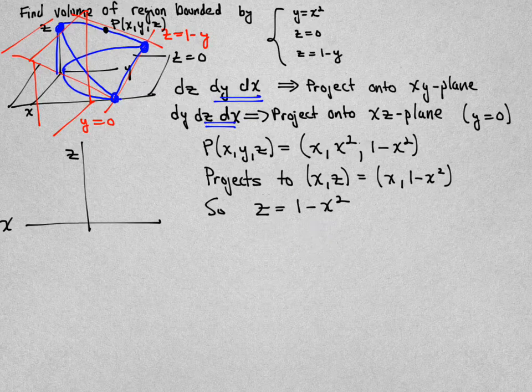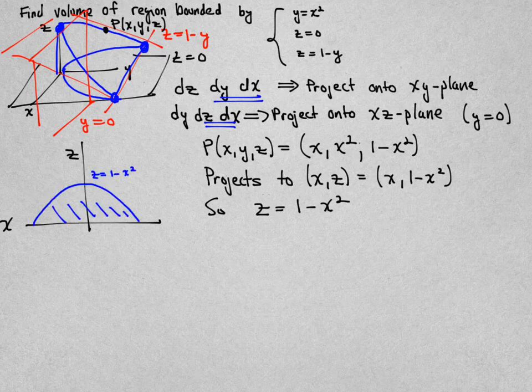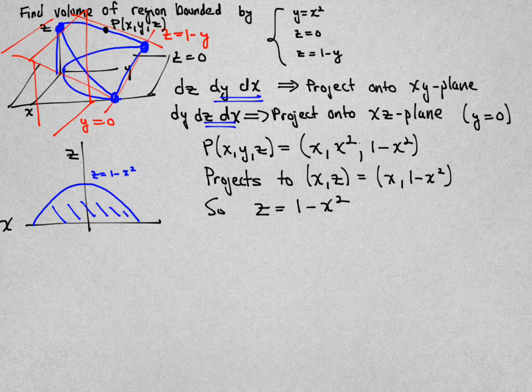And I go and I plot that on the zx-axis, that's a parabola opening downwards, z equals one minus x-squared. And that region that I've shaded there is the projection onto that back plane.